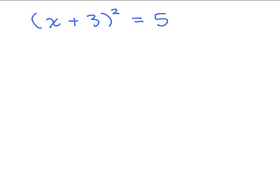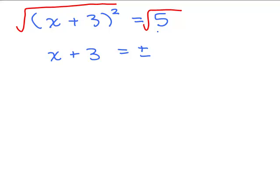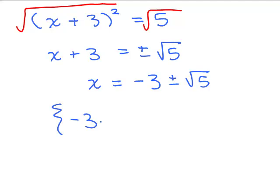Try this one on your own: take the square roots of both sides, remember your plus or minus. Taking the square root of both sides and the square root of x plus 3 squared gives x plus 3 equals plus or minus the square root of 5. Since the square root of 5 can't be simplified, we write it as is. Subtracting 3 from both sides gives x equals negative 3 plus the square root of 5, or x equals negative 3 minus the square root of 5.